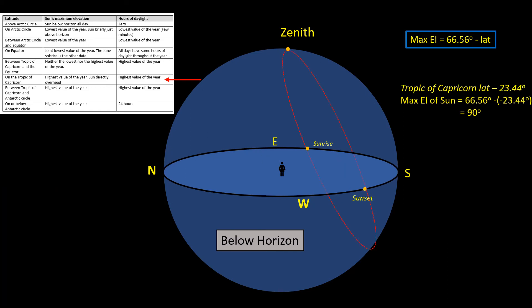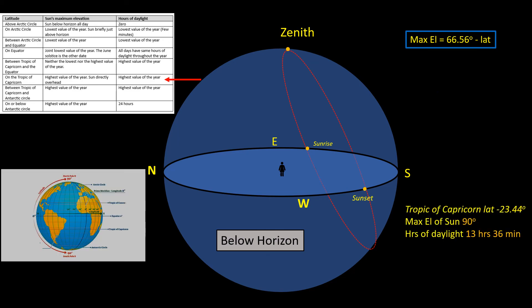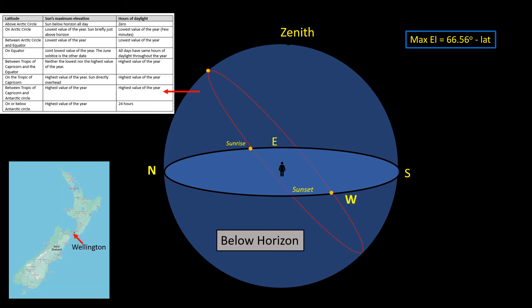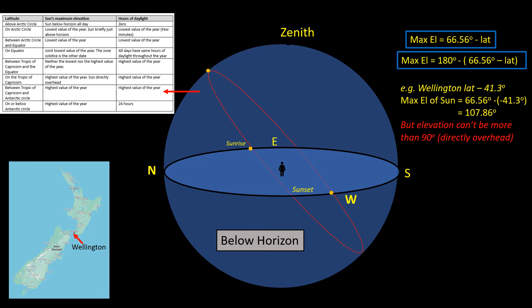So at locations on the Tropic of Capricorn, the sun is directly overhead at its maximum elevation. If we go to locations further south than the Tropic of Capricorn, then the formula we've been using so far would give a maximum elevation more than 90 degrees, which is directly overhead. So to give us an elevation between 0 and 90, we have to change it slightly and subtract our answer from 180 degrees.